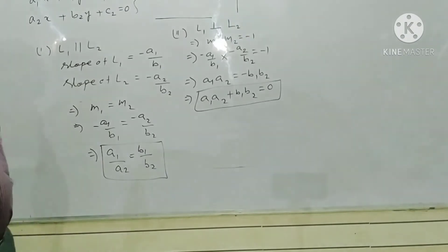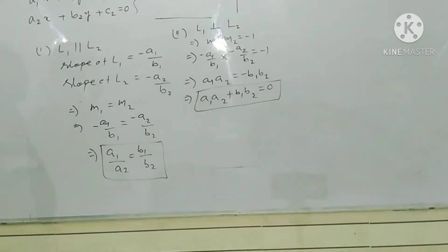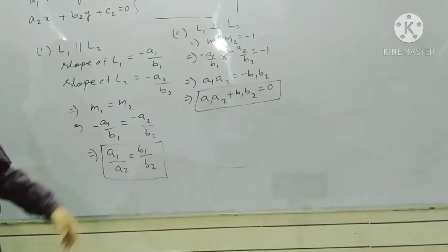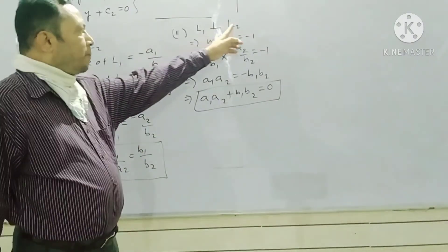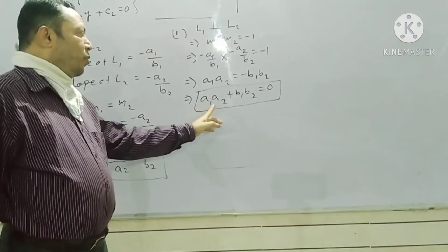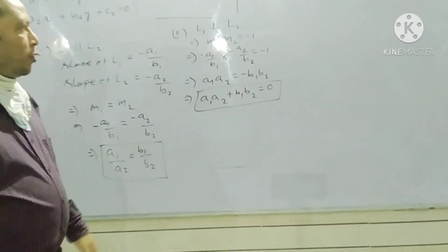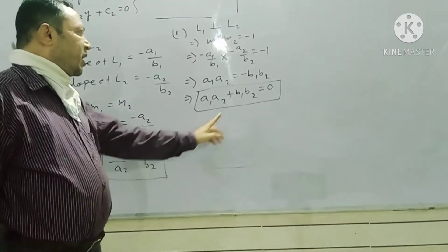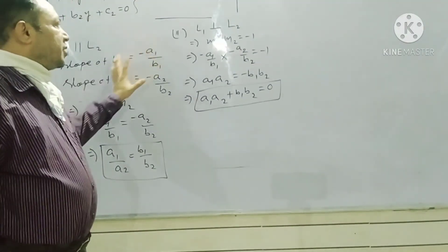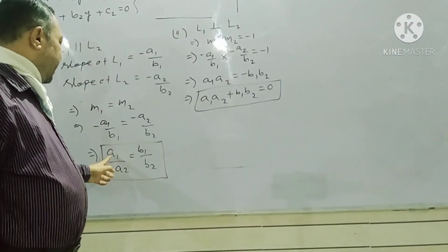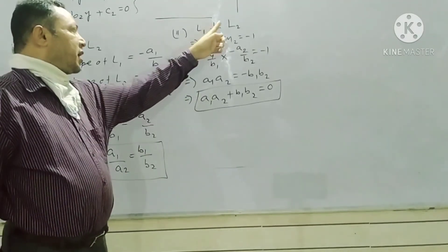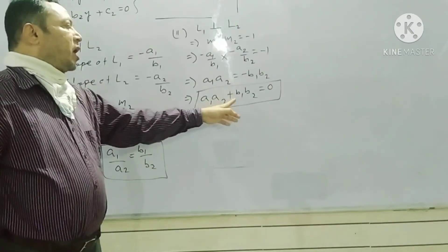You should remember these things about the general equation of the straight line. If the general equation is given, the slope is minus A by B. If two straight lines are parallel, then A1 by A2 must equal B1 by B2. If two straight lines are mutually perpendicular, then A1·A2 plus B1·B2 must equal 0. Just remember these two formulas.